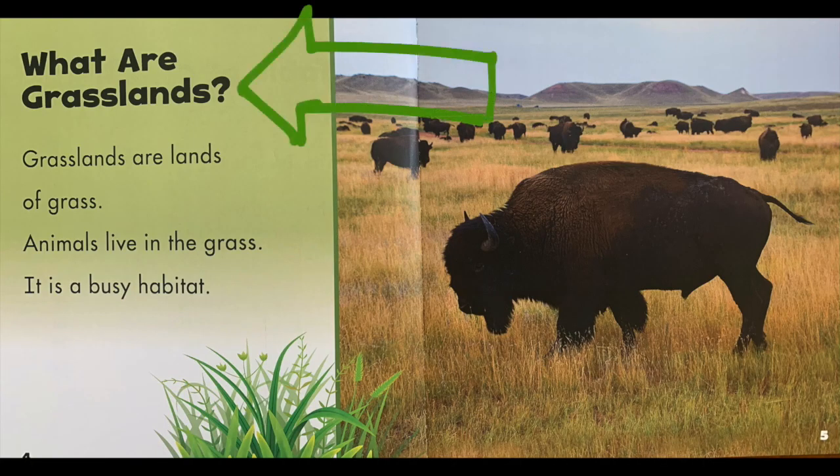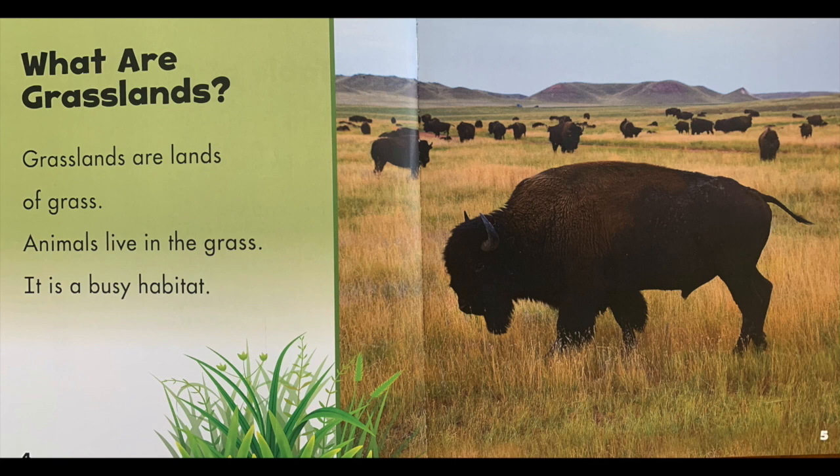Here is the first heading, and this heading says What Are Grasslands? Grasslands are lands of grass. Animals live in the grass. It is a busy habitat.